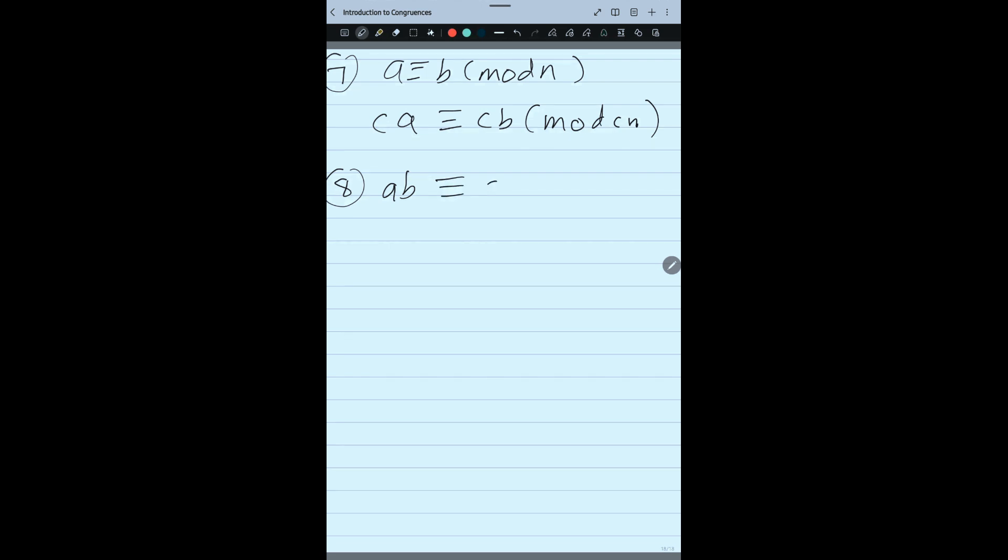Now the 8th property is, if AB congruent AC mod M, now please understand here very carefully. Simply you cannot write B congruent C. You can't think I will cancel A.